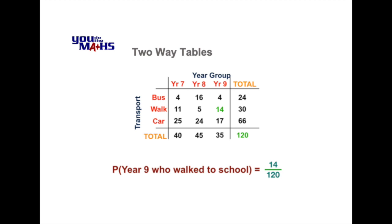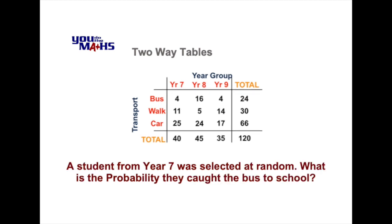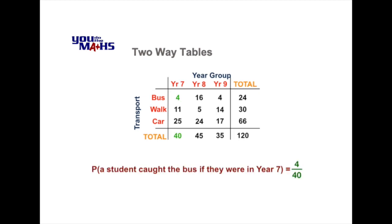The second probability question has a slight variation. It says a student from Year 7 was selected at random, so we've narrowed our choice down to just Year 7 students — this is what's called conditional probability. We've changed the sample space from the entire group of 120 students to just those in Year 7, which is 40. We're after the probability that they caught the bus to school, and looking at the Year 7 column we can see that there are 4 students who caught the bus. So the probability is 4 out of 40.